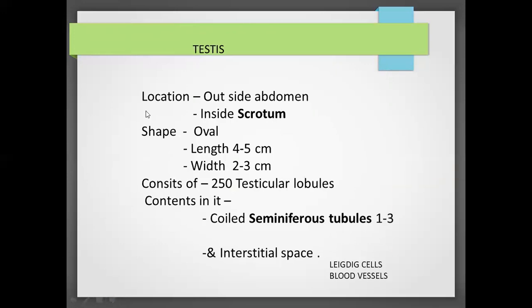The testes is located outside the abdominal cavity and has an oval shape. It has a certain length and width. Each testis consists of 250 testicular lobules. These are called testicular lobules, and each lobule contains a couple of coiled tubes.